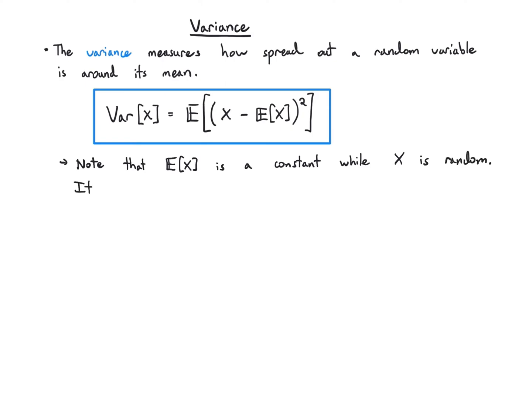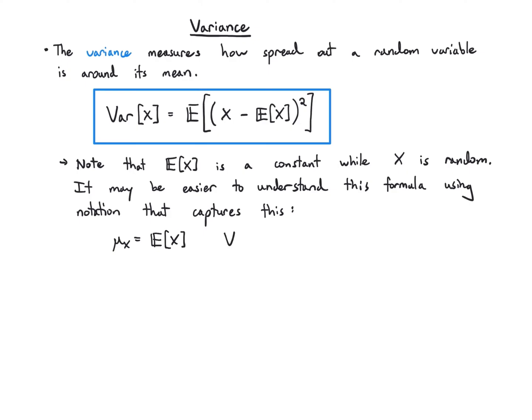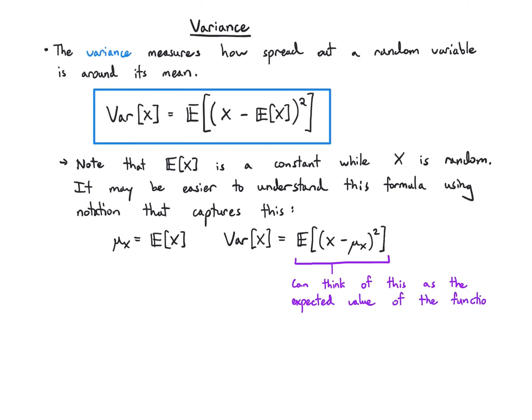x is the random variable, and it's easier to understand formulas like this with a little extra notation. Let's define mu of x as the expected value of x. Then variance of x becomes the expected value of x minus mu of x, squared. You can think of this as the expected value of a particular function y equals x minus mu of x squared, where mu of x is just some constant — the mean.